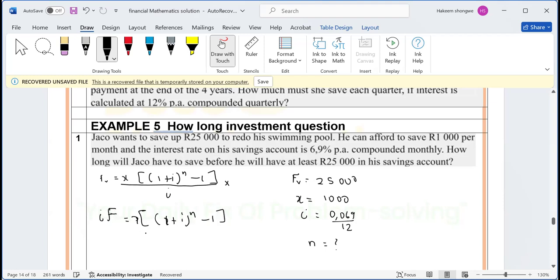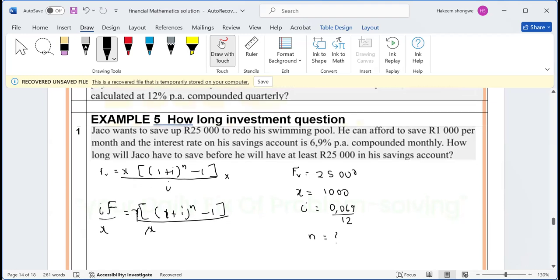What is the next thing you're going to do? You're going to divide by X. Divide by X. X and X are going to divide each other out. Now it means we have removed the bigger bracket. So if you remove the bigger bracket, then what are you left with? We have (iF)/X equals (1 + i) to the power of N minus 1.